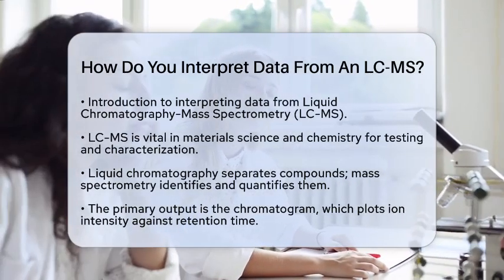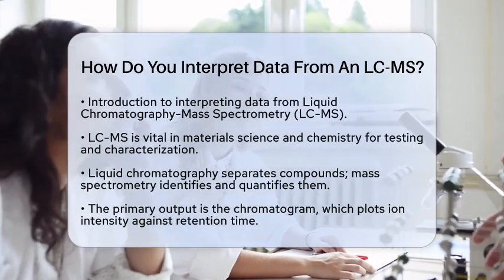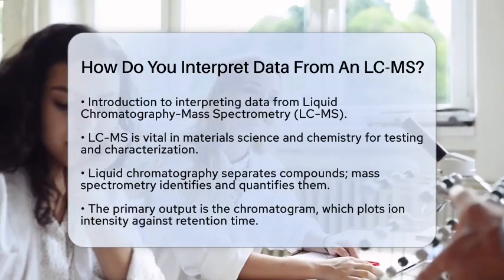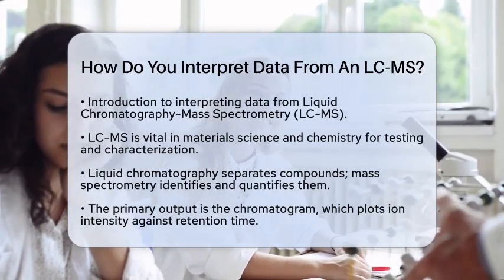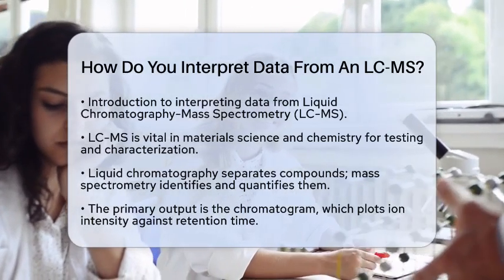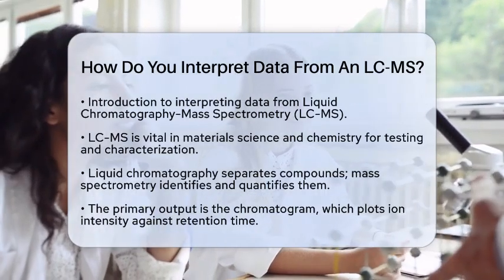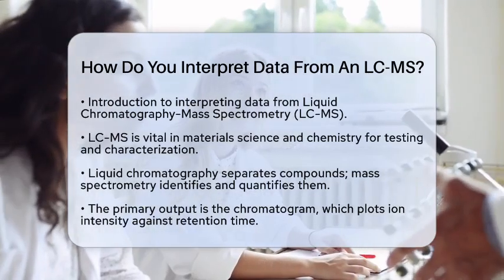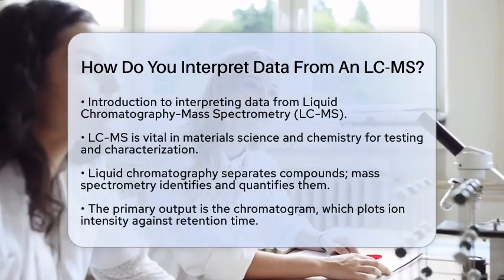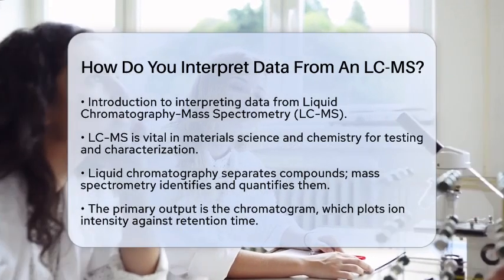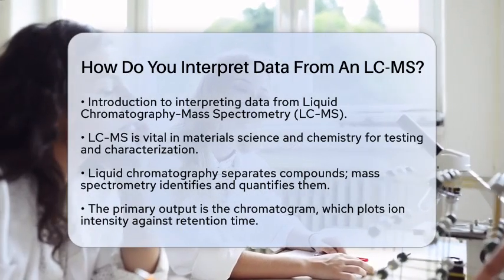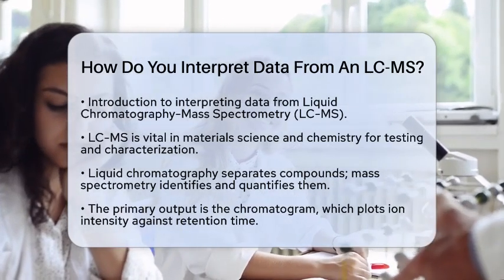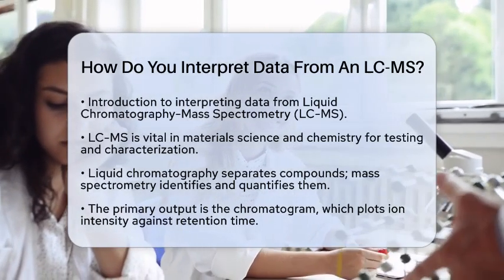When you analyze a sample using LC-MS, the first step is understanding how it works. Liquid chromatography separates chemical compounds in a sample, while mass spectrometry identifies and quantifies them. The result is a wealth of data that requires careful interpretation.